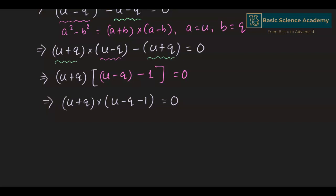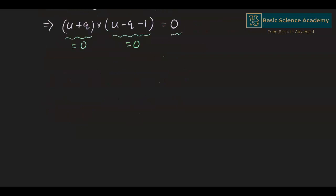Since the product equals zero, either (u+q) equals 0 or (u minus q minus 1) equals 0. When u plus q equals 0, we have u equals minus q. Previously we substituted u equals 2x squared divided by x squared minus 1.